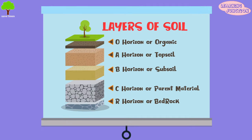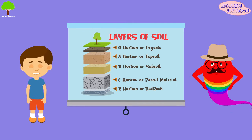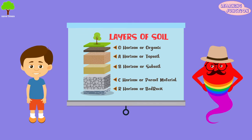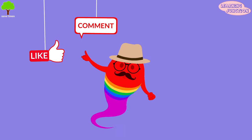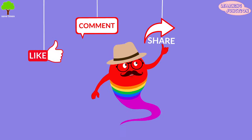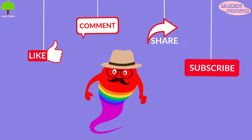Let's revise. O-horizon, A-horizon, B-horizon, C-horizon, and the R-horizon. Now you know a lot about layers of soil. Please drop a like, leave a comment, share the videos, and don't forget to subscribe. Bye-bye!